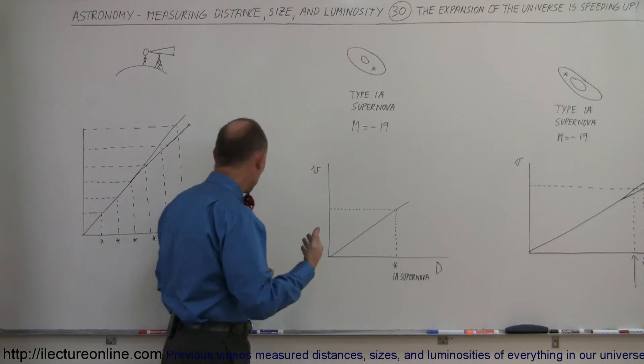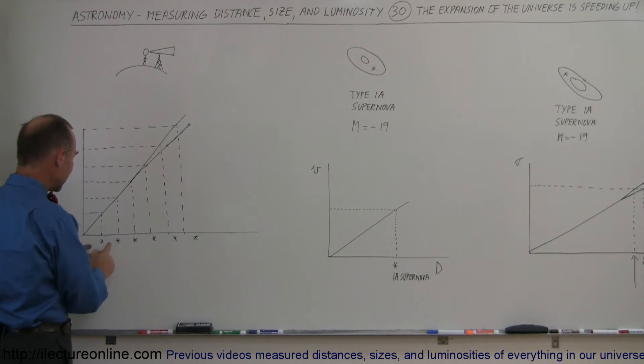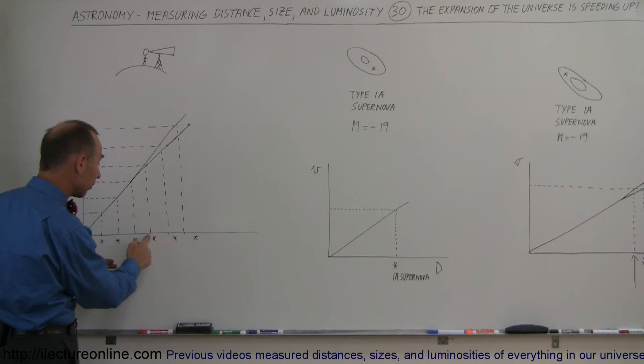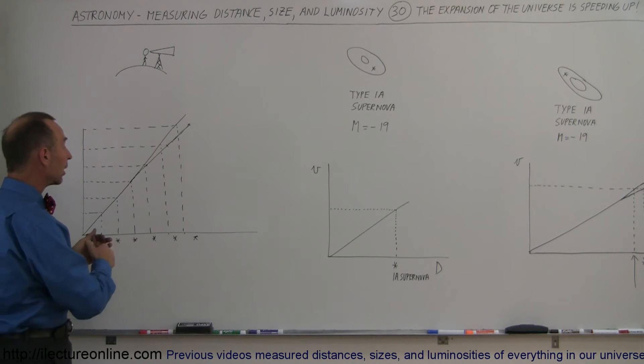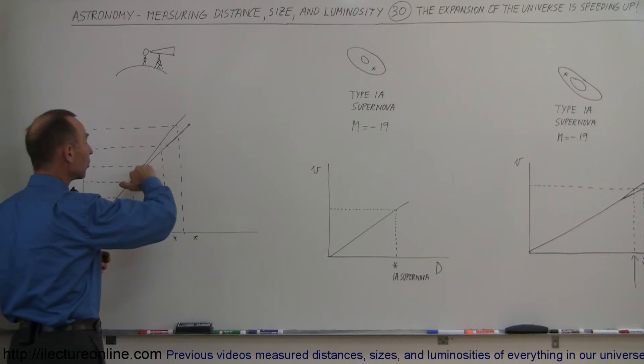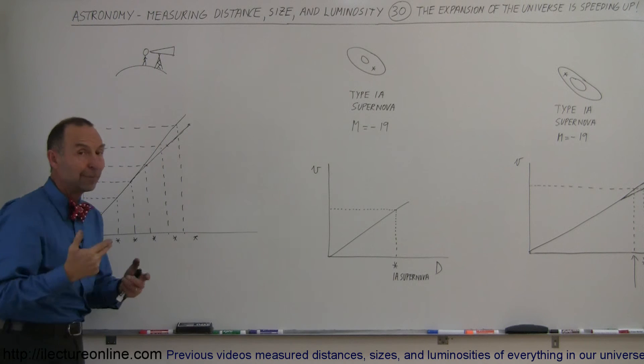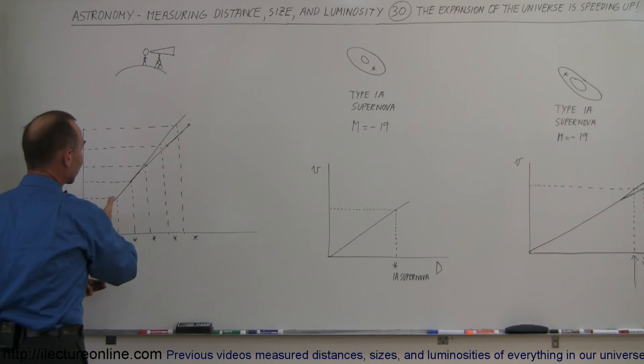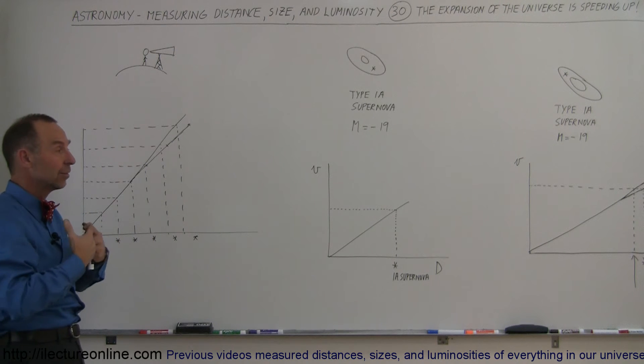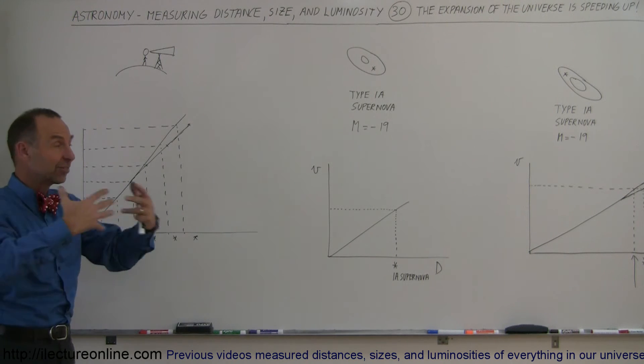So if we continue doing that, if we continue looking at galaxies further and further away, initially the distance that was determined by the Hubble constant matched the distance as determined by the supernova explosion. But then as we started looking farther and farther away, the supernova explosion seemed to have occurred further and further away than would be indicated by the Hubble constant, which means that the Hubble constant was decreasing in the past. Or better yet, as time went forward, the Hubble constant was increasing, meaning the expansion of the universe is accelerating.